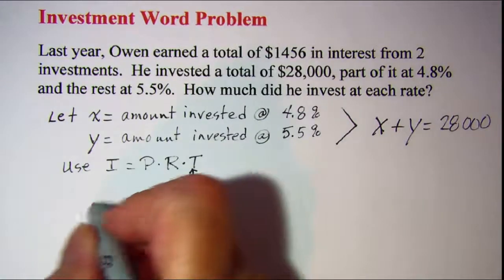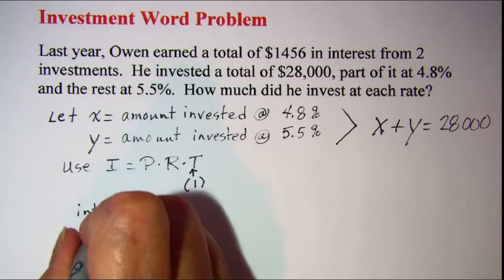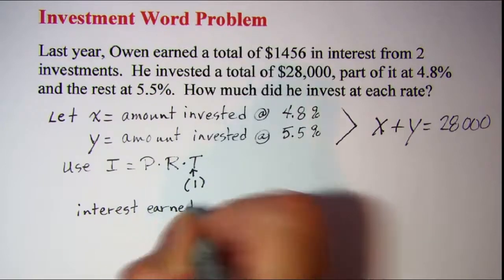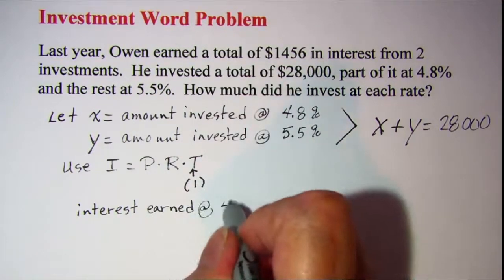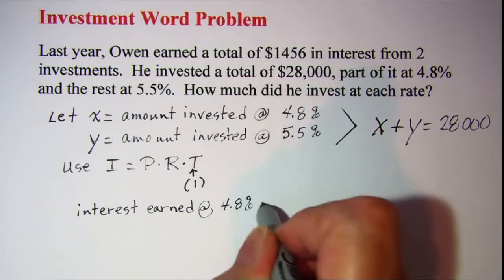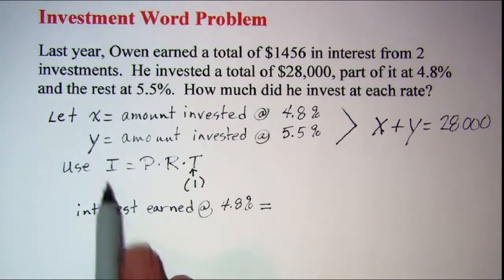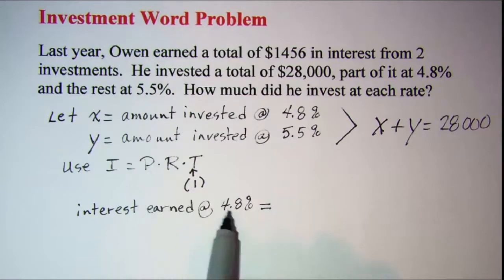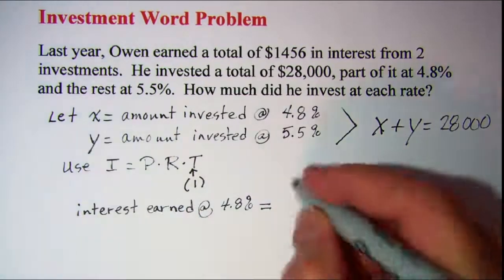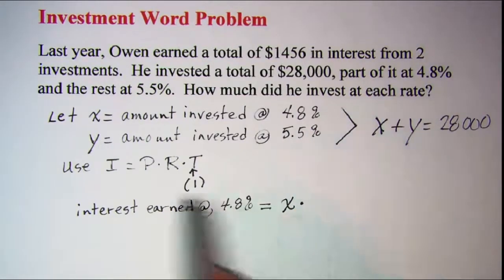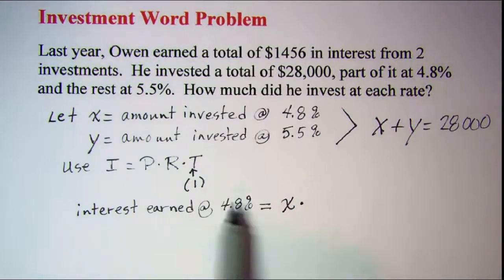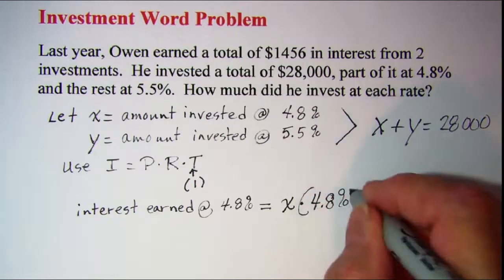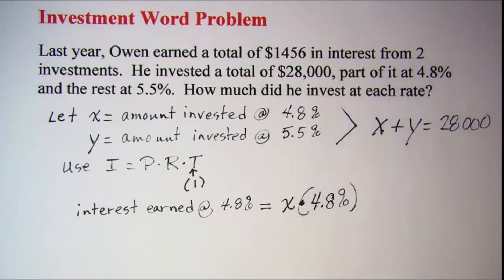So we can say then the interest earned at 4.8% is going to be the principal, which is how much we invest at 4.8%, which is x. So it will be x times the rate, which is 4.8%. Let me put parenthesis around this because the multiplication looks like a decimal.